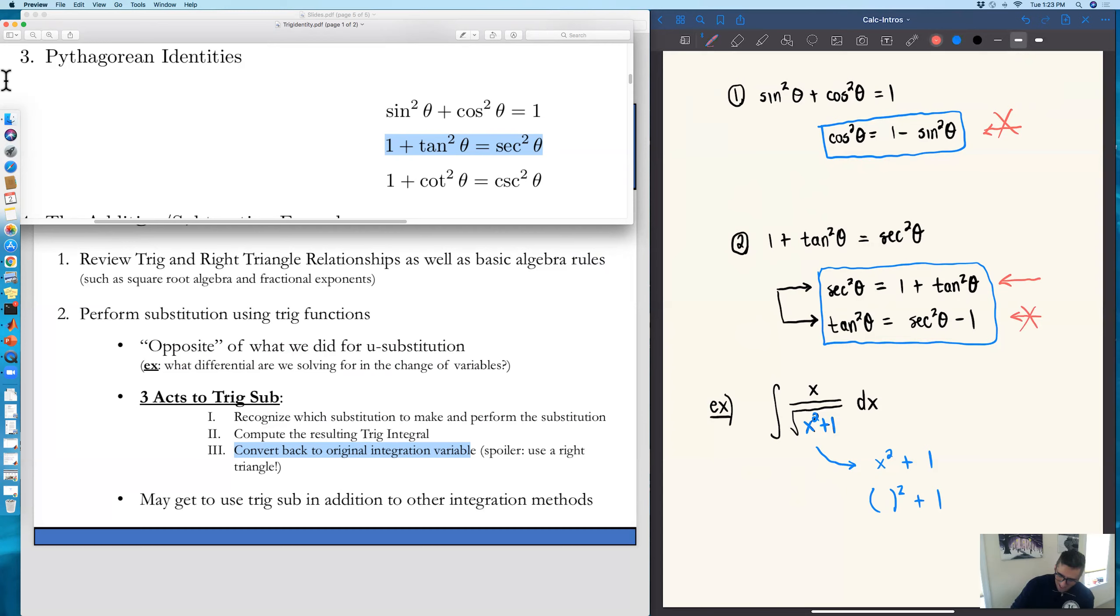So what we're doing is trying to then match that identity to the form of what we have underneath that square root. And what we can see then is, well, if I want a one plus something squared, what I need then is inside those parentheses, I need to have a tangent. So the substitution we'd actually make in this case would be that we let x equal tangent theta. So we'll continue with this in the next video, but I just wanted to show us the process of getting started. How we start thinking about matching trig identities to the form that we see underneath the square root. Check out the next video to finish this solution.